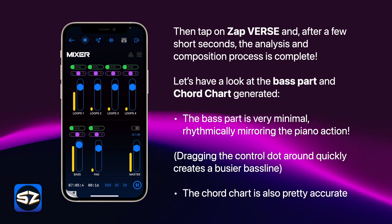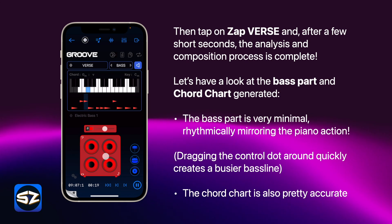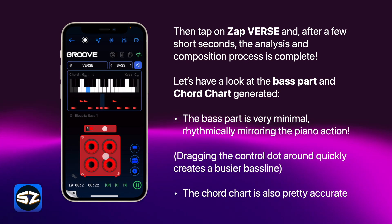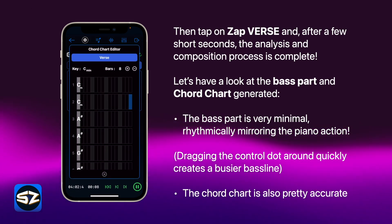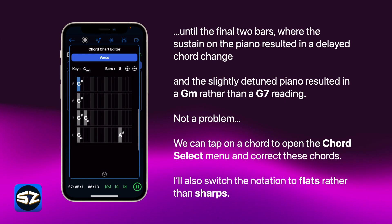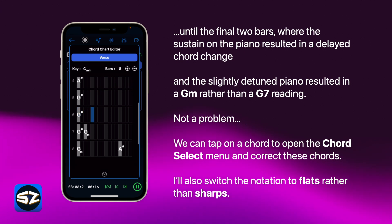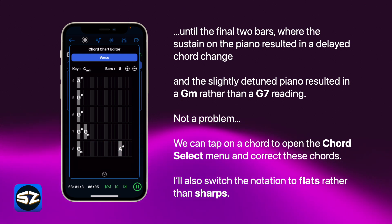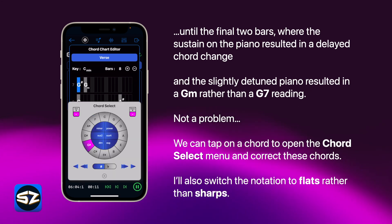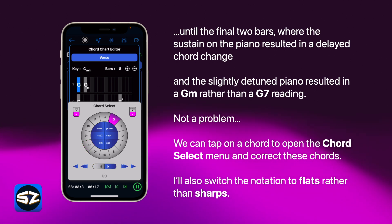You can turn it up a little bit as well so you can hear it better. The chord chart is also pretty accurate, until the final 2 bars where the sustain on the piano resulted in a delayed chord change, and my slightly detuned piano resulted in a G minor rather than a G7. Not a problem — we can tap on a chord to open the chord select menu and correct these chords. I'll also switch the notation to flats rather than sharps.